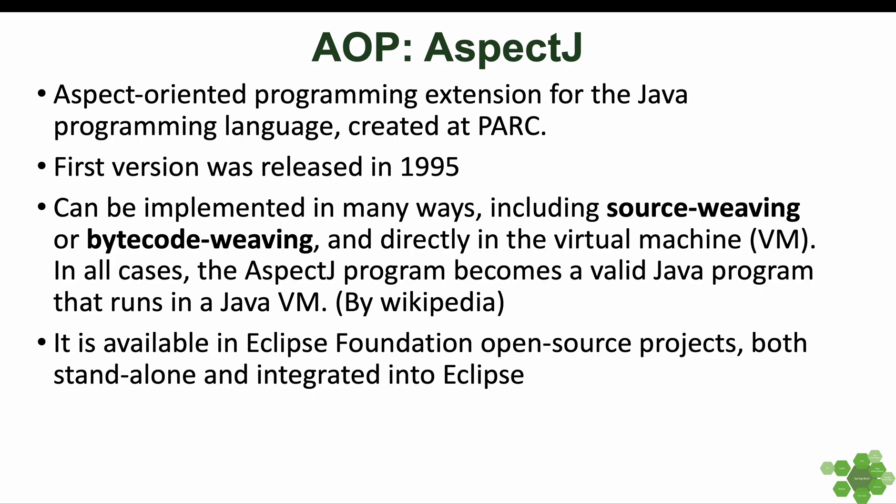AspectJ can be implemented in many ways, including source code weaving, bytecode weaving, and directly in the virtual machine. In all cases, the AspectJ program becomes a valid Java program that runs in a Java virtual machine.